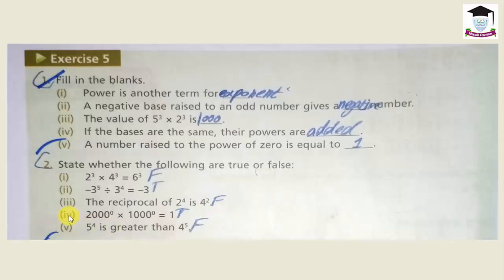Fourth statement: 1000 power 0 multiplied by 1000 power 0 is equal to 1. This is true. As mentioned in fill in the blanks, any number with the power 0 is always equal to 1. So 1000 power 0 equals 1, and 1000 power 0 equals 1, giving 1 multiplied by 1, which equals 1. The statement is true.